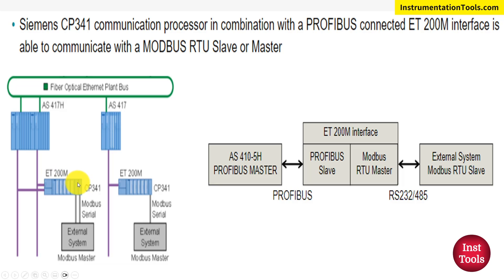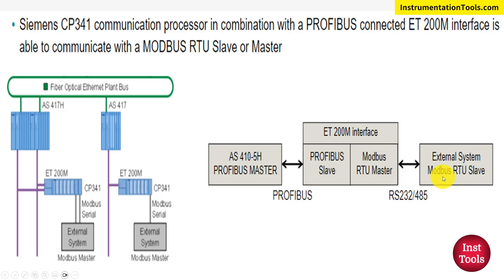Here we can see the CP341 card, which acts as the Modbus RTU master. In Modbus communication, slaves hold the data and the master requests the data from the slaves. This connection is a serial RS-232 or RS-485 connection. For example, a Modbus slave device such as a pH meter stores the process variable data. The CP341 card acts as master, pulls data from the active slave device, and stores it in the ET200M CP341 card. It also acts as a converter.